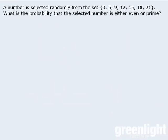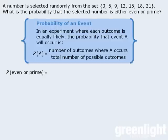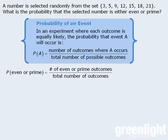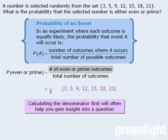Now let's try another example. Here, we are randomly selecting one number from the given set, and we want to calculate the probability that the selected number will be either even or prime. We will use the probability formula. As always, let's begin with the denominator. There are seven numbers in the set, and it's equally possible to select any of these numbers, so there are seven possible outcomes. Of the seven outcomes, four are either even or prime. So the probability is four-sevenths that the selected number is either even or prime.